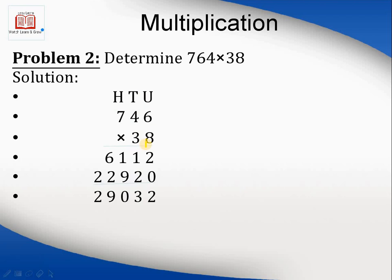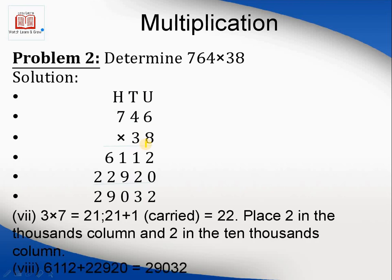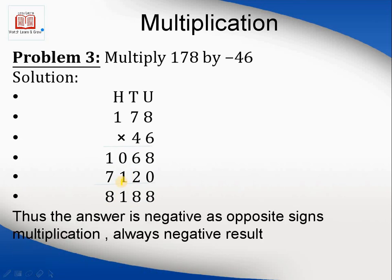The result is 29032. This is the addition: 2 plus 0 is 2, 1 plus 2 is 3, and so on. This is how we multiply numbers.